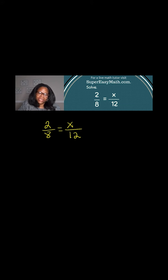When we have a problem like this, we want to see if we can go from the numerator to the numerator or the denominator to the denominator to begin with, or at least that's my preference. And when I look at this, I can see that I can take 8 and multiply it by 1.5 to get to 12.